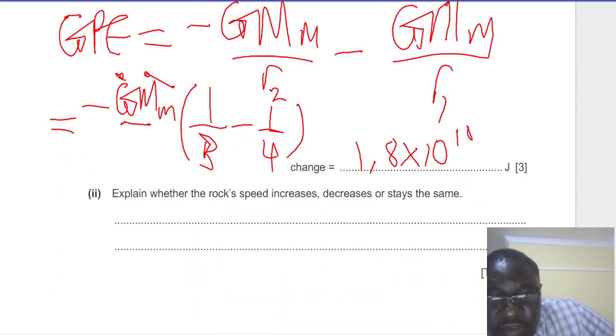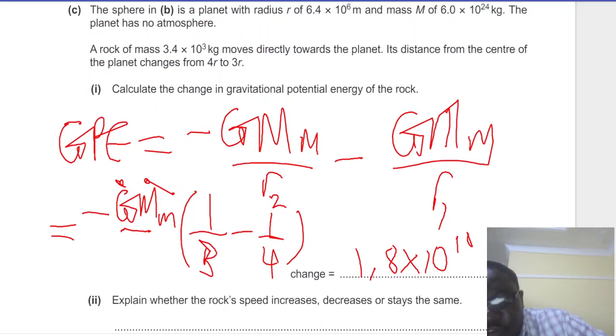Then it says, explain whether the rock's speed increases, decreases, or stays the same. Now, this rock, as we go back to our graph, the rock starts off from there, where the potential energy is greater.